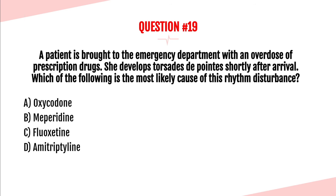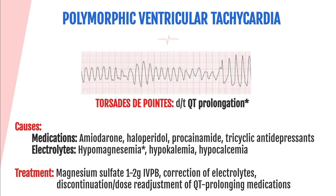Question number nineteen. A patient brought in with a prescription drug overdose develops torsades de pointes shortly after arrival. Which is the most likely cause? Oxycodone, meperidine, fluoxetine, or amitriptyline? The answer is D, amitriptyline. Amitriptyline is a tricyclic antidepressant that can cause QT prolongation leading to torsades. Other medications that cause torsades through QT prolongation include amiodarone, Haldol, procainamide, other tricyclic antidepressants, and hypomagnesemia.